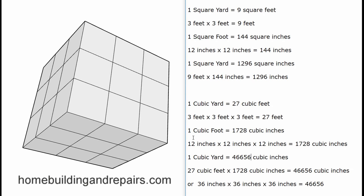If you want one cubic foot broken down into cubic inches, you multiply 12 times 12 times 12 — because we have 12 segments in each of the three directions. That gives 1,728 cubic inches in one cubic foot. One square yard equals 1,296 square inches — take the nine square feet and multiply by 144 square inches per square foot.